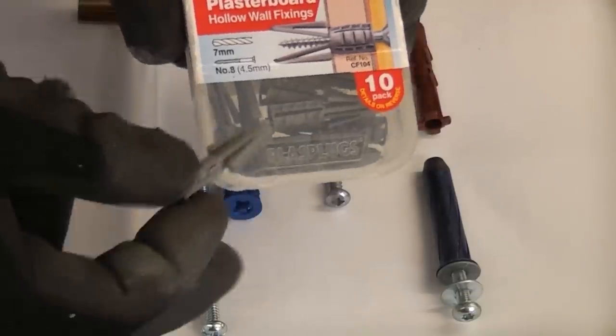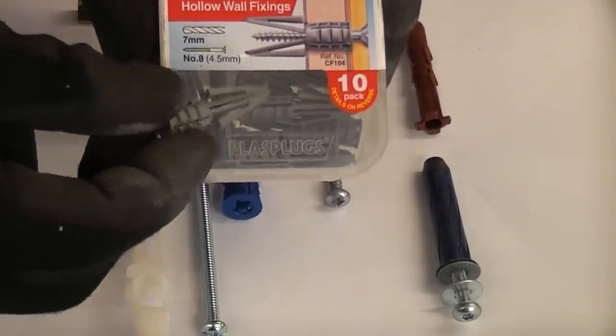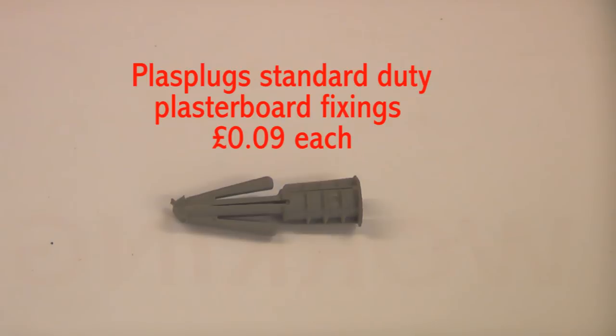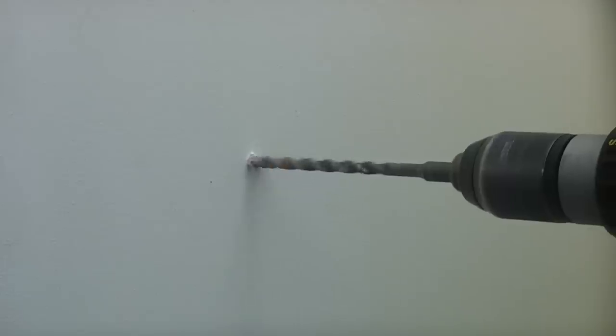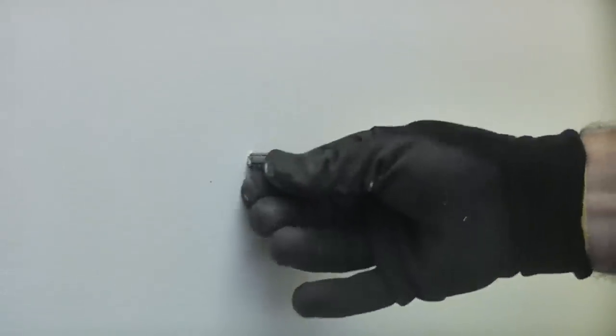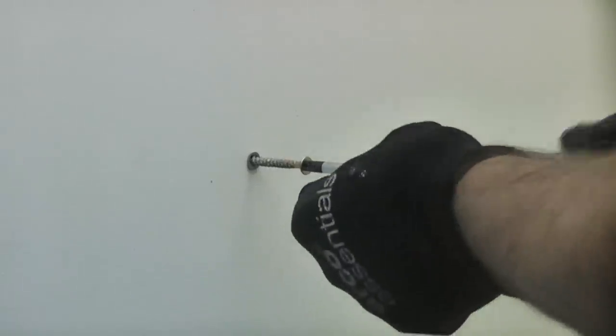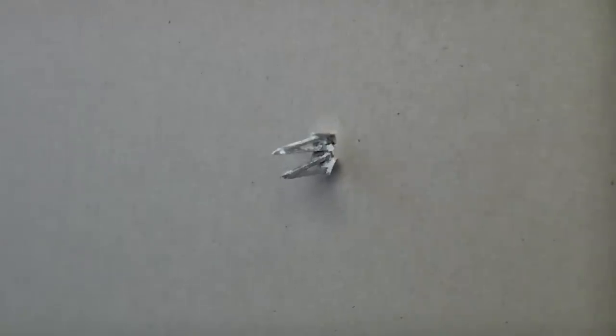We're going to start off with this one, which is the Plasplugs standard plasterboard hollow wall fixing. To start off with, I'm going to drill a 7mm hole. I'm going to push that in the hole until it is flush, and then I'm going to take a number eight wood screw and drive that into the center of the fixing. So that screw is now tight, and if you were putting up a picture frame or something like that, that fixing would be ideal. You have a very lightweight fixing that you could use in plasterboard.